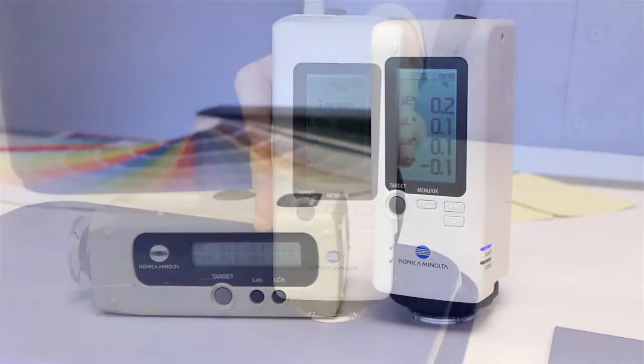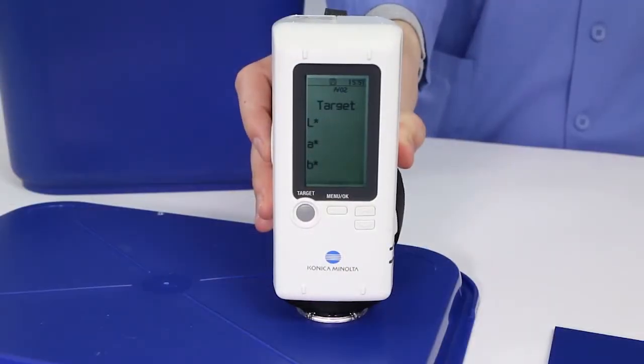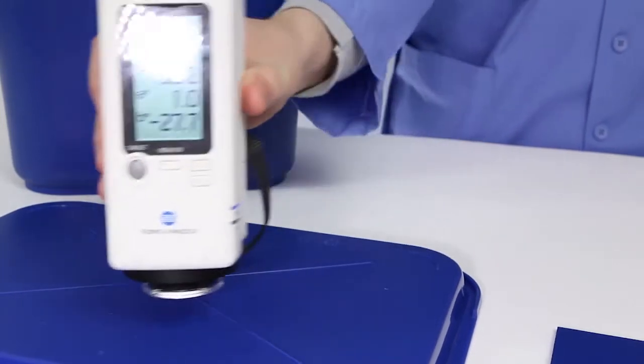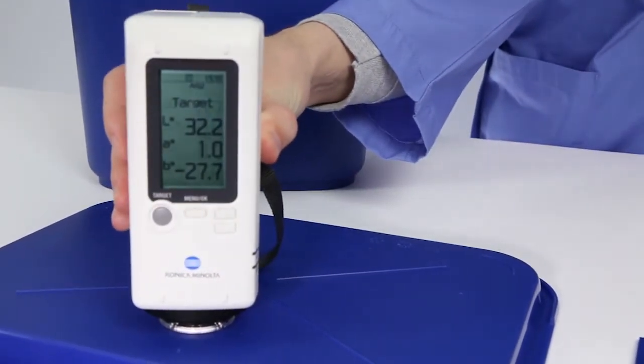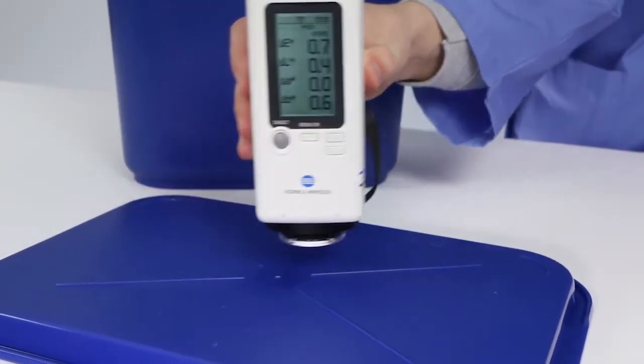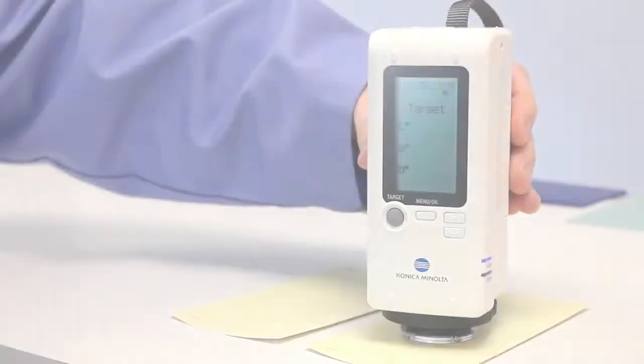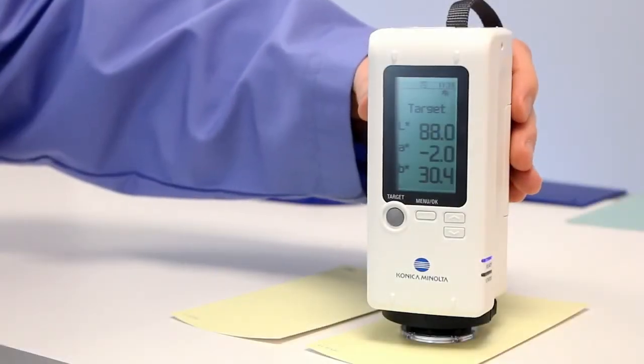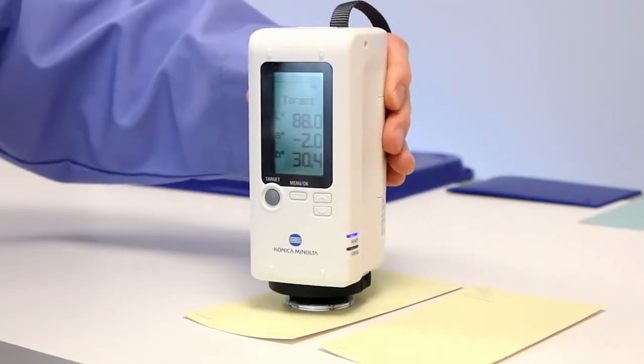This new design, combined with a built-in xenon lamp light source, ensures accuracy, repeatability, and ease in a variety of measuring conditions. The CR-10 Plus Color Reader allows you to measure color difference with confidence.